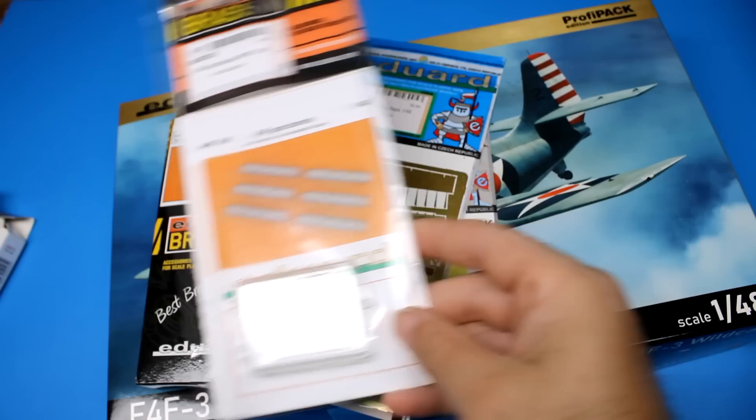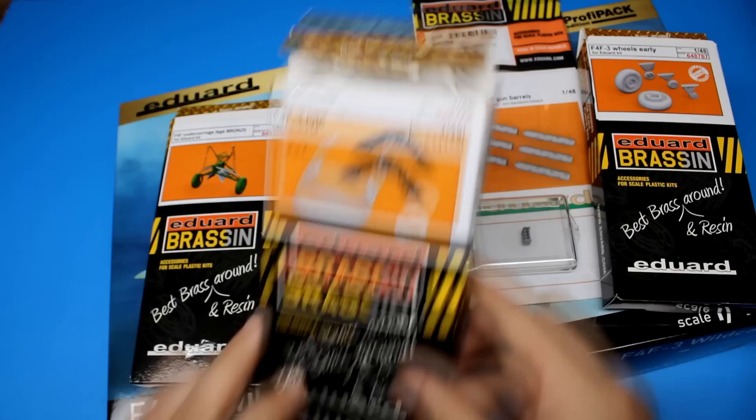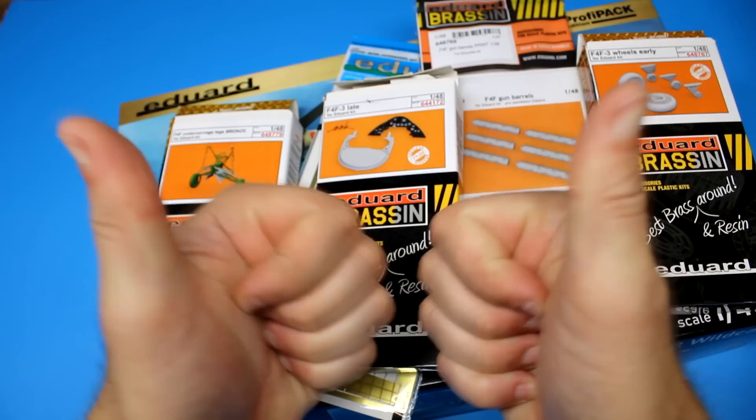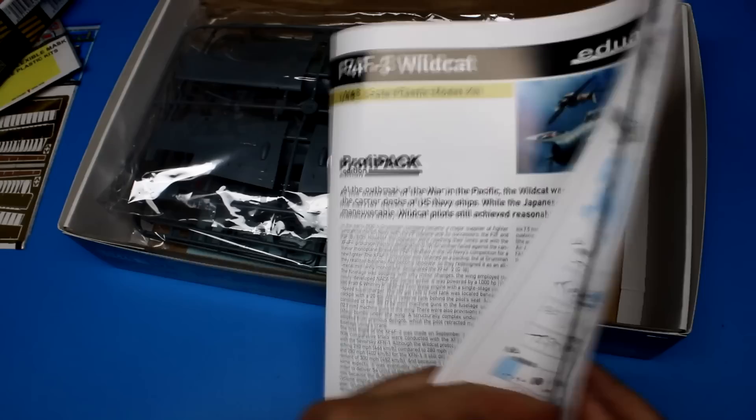Those fine folks over at Edward also sent some extras for the kit for me to try out and I didn't use all of them for this kit just because some of them are for the late Wildcat and I planned on building that as well. But ones I will use for this kit will be the brass flaps, the resin wheels, and the gun barrels which are printed in super clean tight detail.